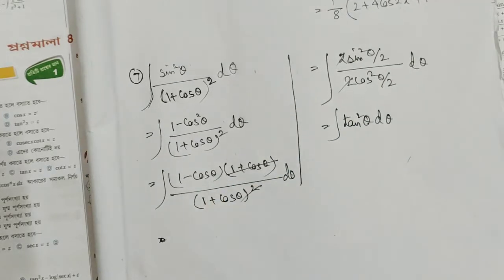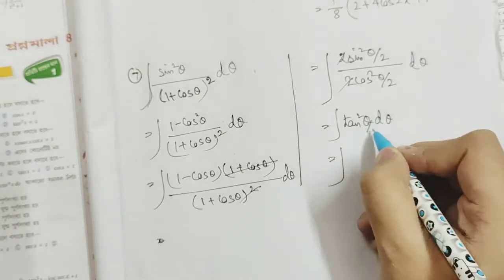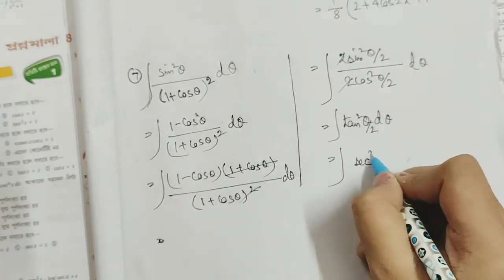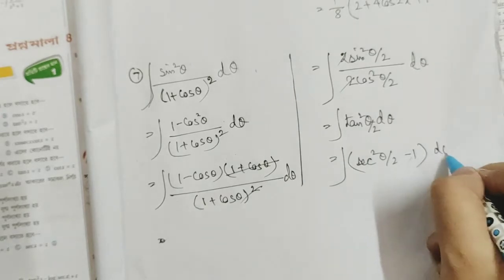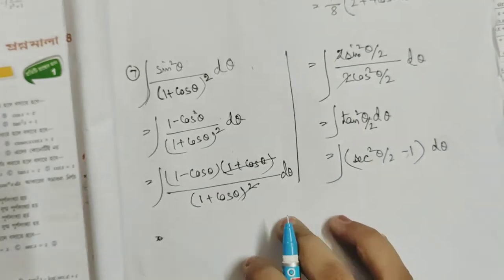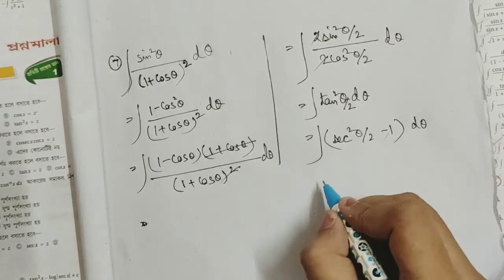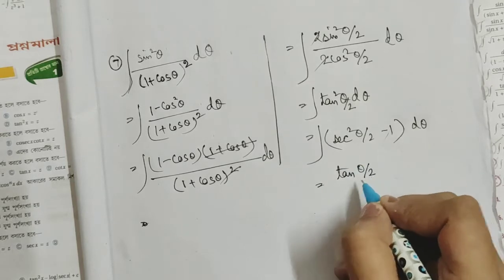We call it sec squared (theta by 2) minus 1. So we call it 2 sec squared (theta by 2) minus 1, d theta.